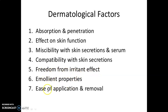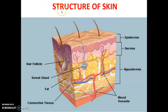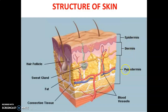Additional dermatological factors include emollient properties and ease of application and removal. Looking at the structure of skin in the diagram: the upper layer is the epidermis, beneath it is the dermis, and beneath the dermis is the hypodermis. Blood vessels, hair follicles, sweat glands, fats, and connective tissues are also present in the skin.